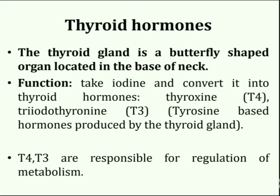In short form, thyroxine is known as T4 and triiodothyronine is indicated by T3. These are tyrosine-based hormones produced by the thyroid gland that are primarily responsible for regulation of metabolism.